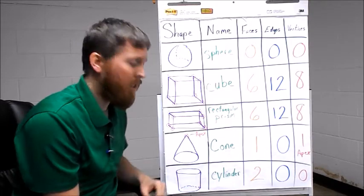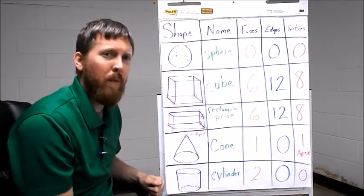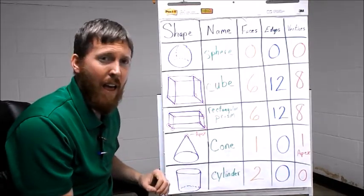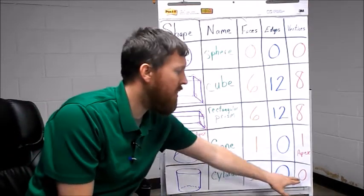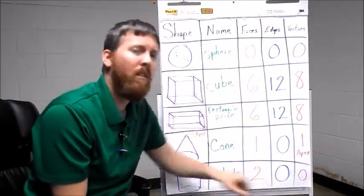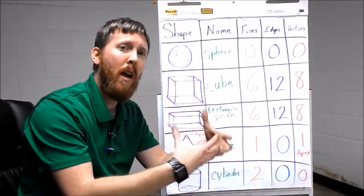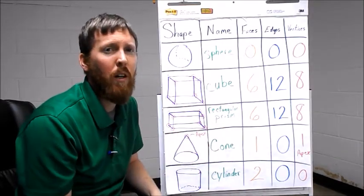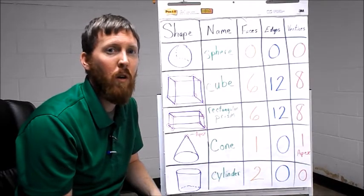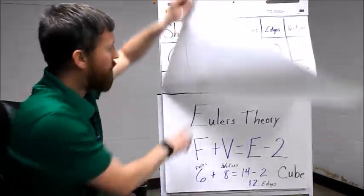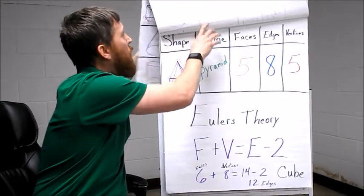For a cylinder, a cylinder has two faces, a top and a bottom. It does not have any points, so vertices are zero. And for edges, it's also zero because a cone is round, there are no straight lines, so we classify that as zero edges.